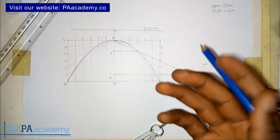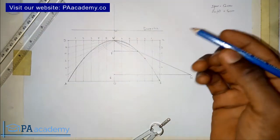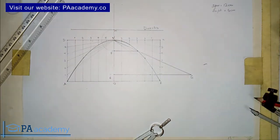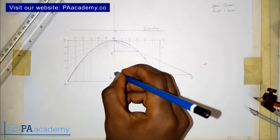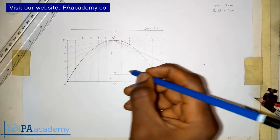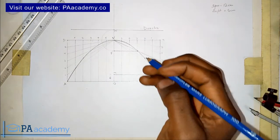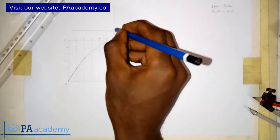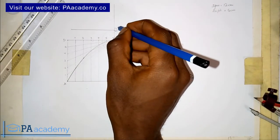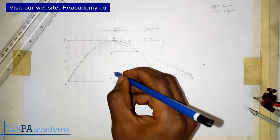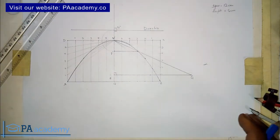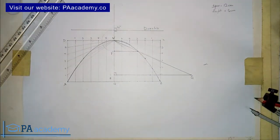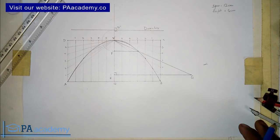This point here represents the focus. This is how you find the focus and directrix of a parabola. Note the 90-degree angle here, and also note that this is also at 90 degrees. So this is it on how to find the focus and directrix of a parabola.